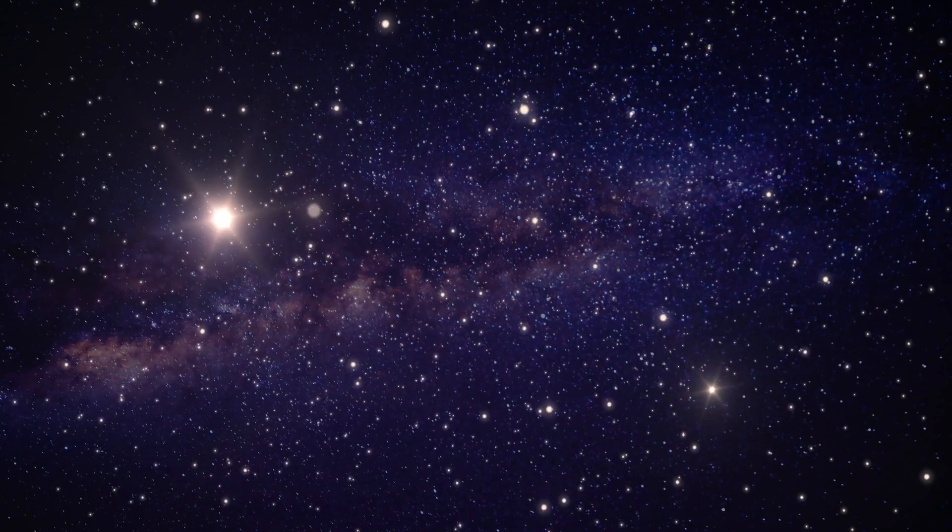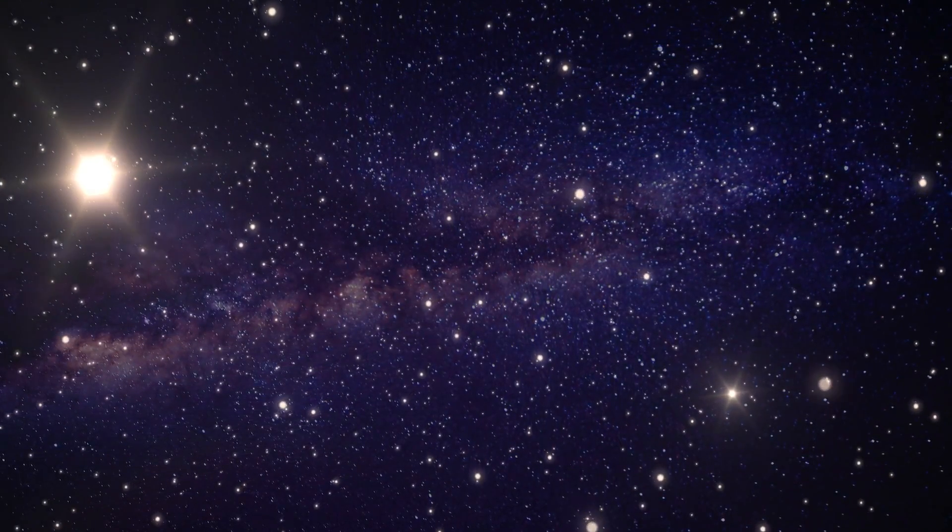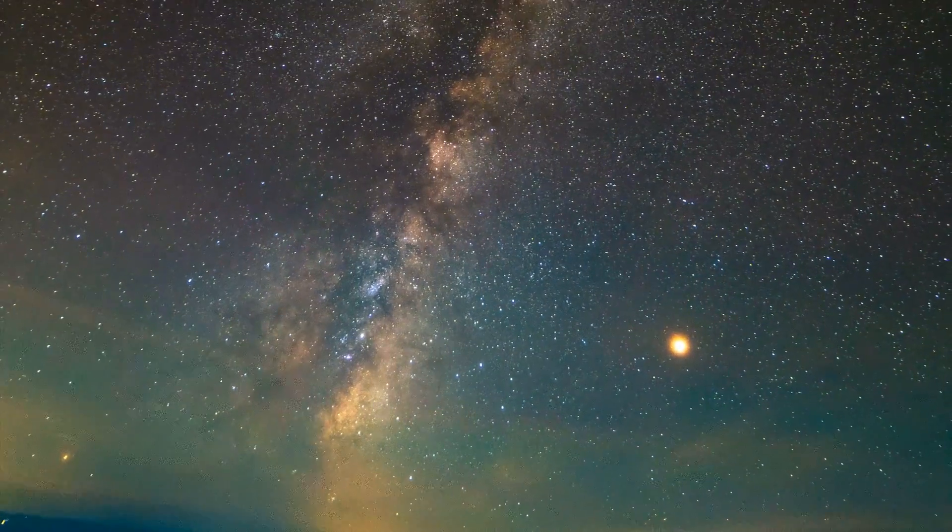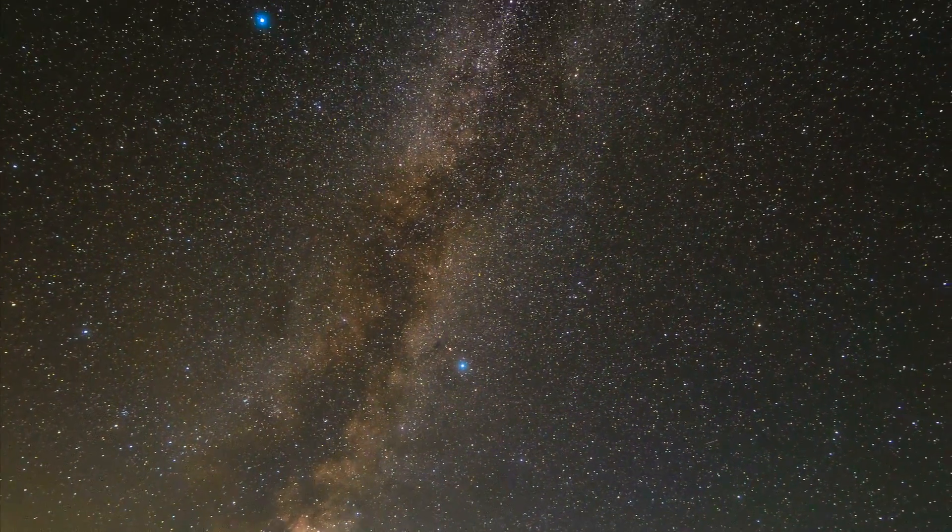Of course, while Gliese 710 is getting close to us, the skies are going to be lit up by yet another star other than our sun. This has actually happened before. Our sun has a close encounter with 490 to 600 other stars every 1 million years.